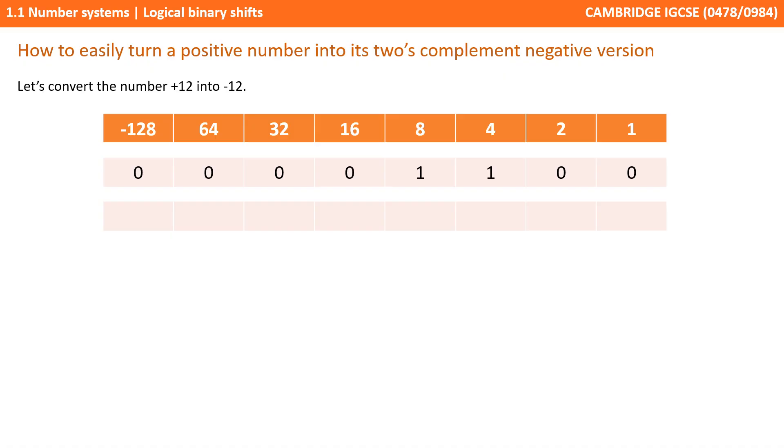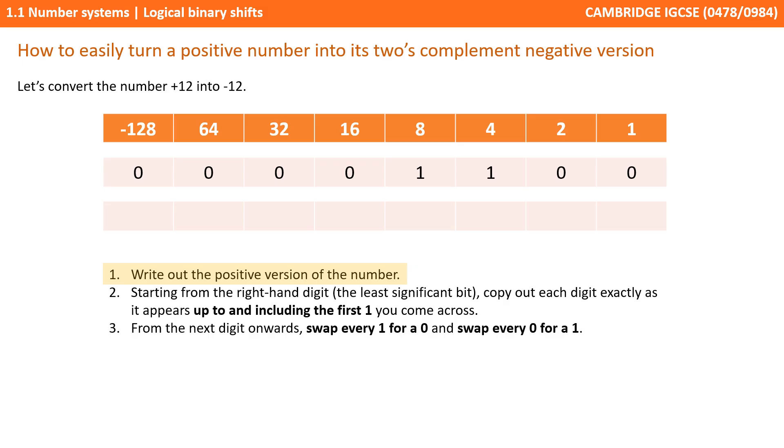Let's actually look at this in practice. We're going to convert the number positive 12 into negative 12. So first we write out the positive version of the number. Here's the number 12 written in binary: we've got a 1 in the 8 column, plus a 1 in the 4 column. 8 plus 4 is 12. We then start from the right-hand side, the least significant bit, and we simply copy every value, working left, up to and including the first 1. So you can see we've done that there: 0 becomes 0, 0 becomes 0, 1 becomes 1.